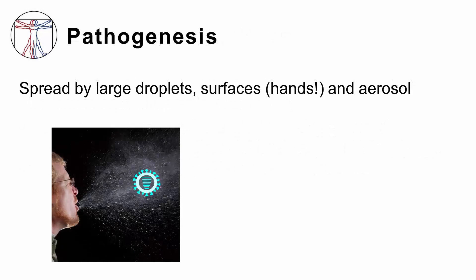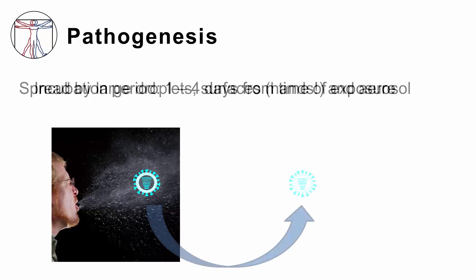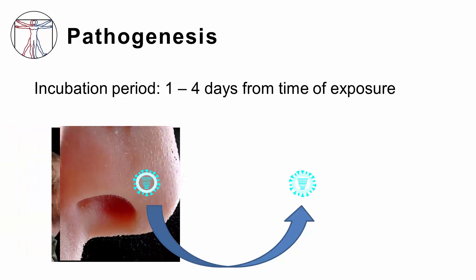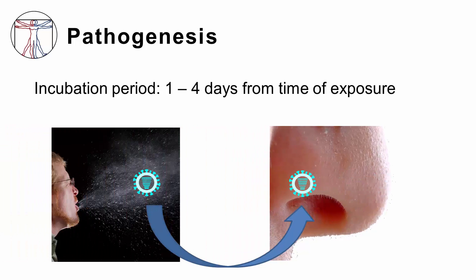Influenza viruses are spread from person to person primarily through large particle respiratory droplet transmission. When an infected person coughs or sneezes near a susceptible person, virus can exit the infected person and enter a new host. Transmission generally requires close contact because droplets do not remain suspended in the air and generally travel only a short distance. Contact with contaminated surfaces is another possible source of transmission, as the virus can live on non-porous surfaces for up to 48 hours and on clothing for up to 12 hours.